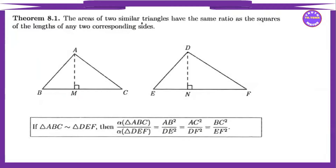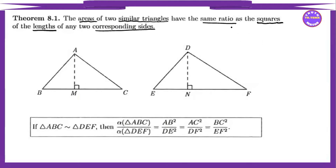The area of two similar triangles. Two similar triangles have the same ratio — specifically, the square of the lengths of any two corresponding sides. The corresponding sides have the same ratio.